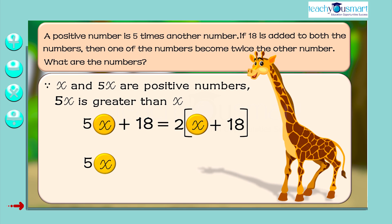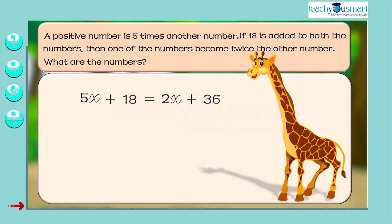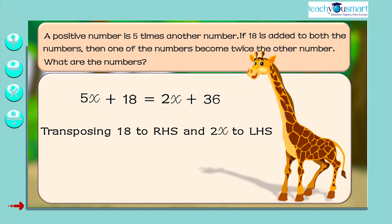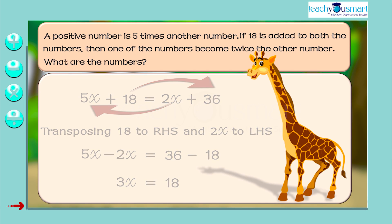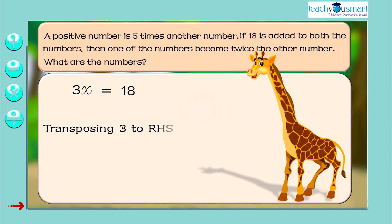That is, 5X plus 18 equals 2X plus 36. Transposing 18 to RHS and 2X to LHS, we get 5X minus 2X equals 36 minus 18. That is, 3X equals 18. Transposing 3 to RHS, X equals 18 by 3, that is X equals 6.